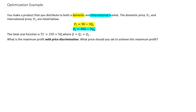We have a total cost function where our quantity is the combined Q1 and Q2. The question is: what is the maximum profit with price discrimination, and what price should you set to achieve it? The idea here is that the two prices between the domestic and international market are going to be different — that's price discrimination.